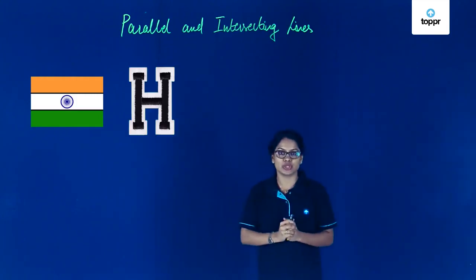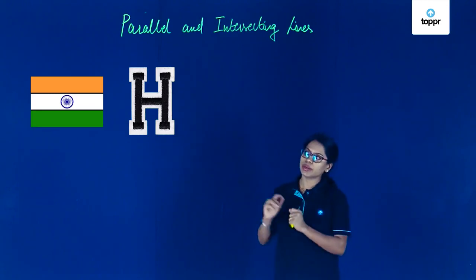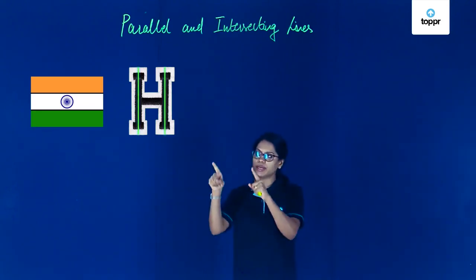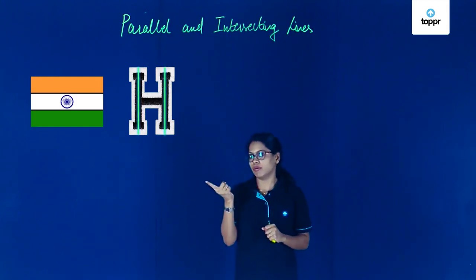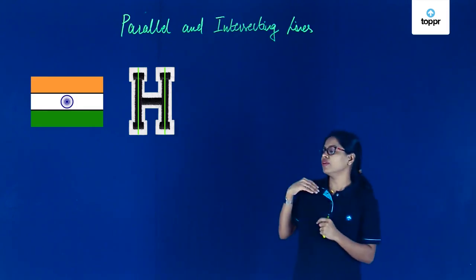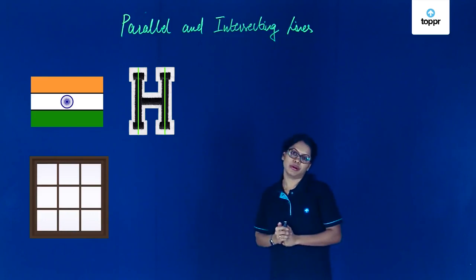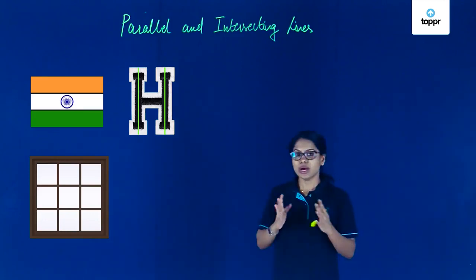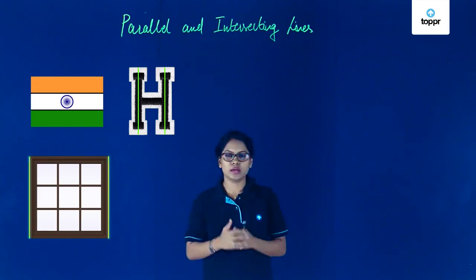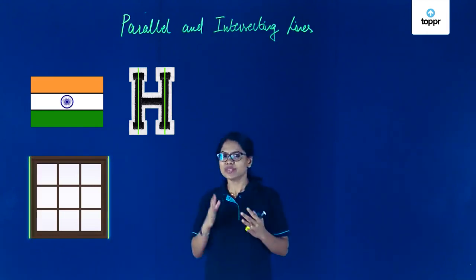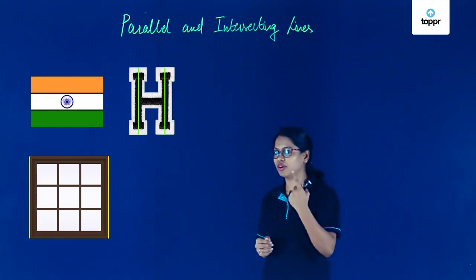Next, let's move to the next image. What do we have here? The English alphabet H. Now look at the highlighted lines — the two lines. What's common? Keep in mind what we saw before. Moving on to the next image: we have a window here, something you come across every day. Now look at the two edges of the window and visualize them as lines. Do we see anything common here?